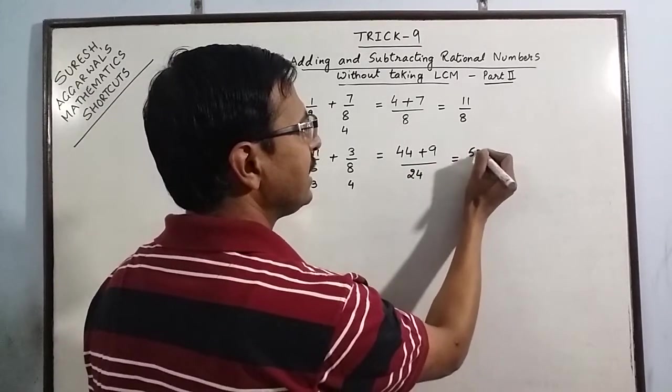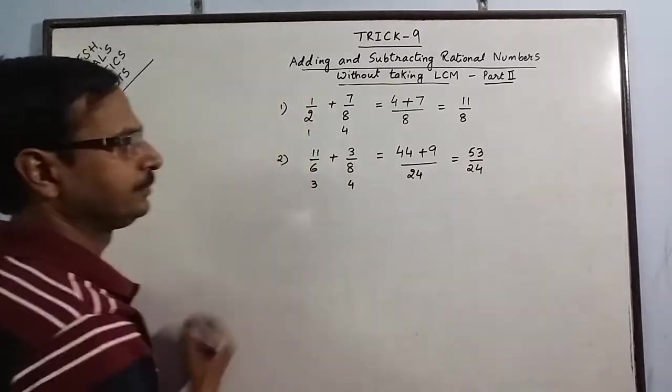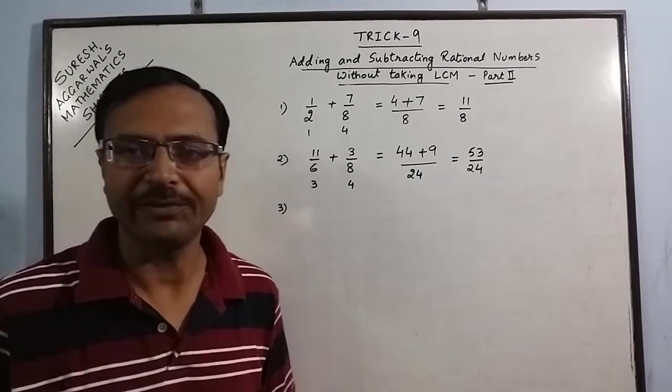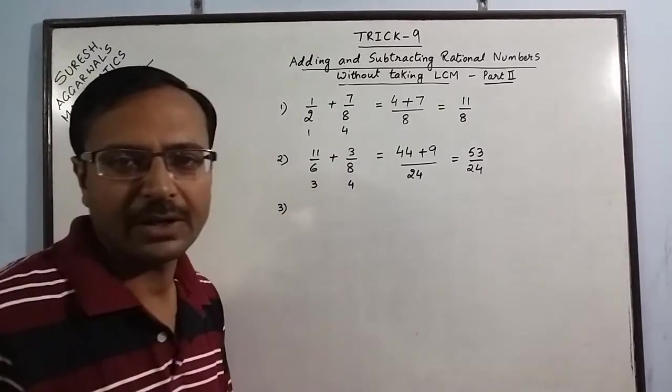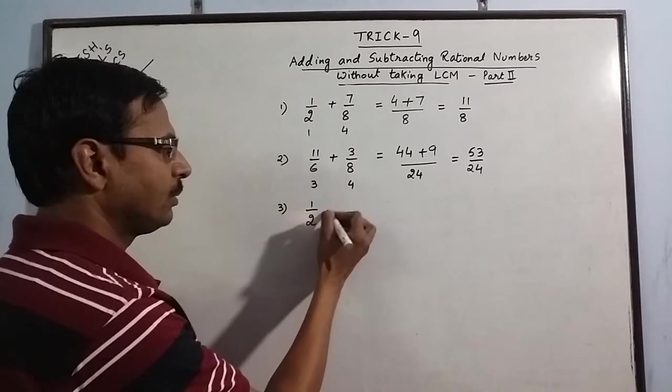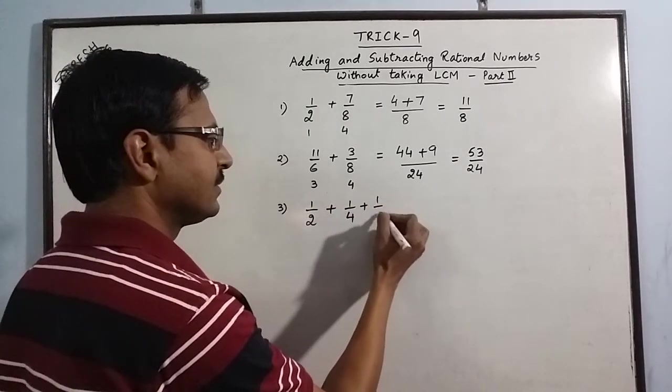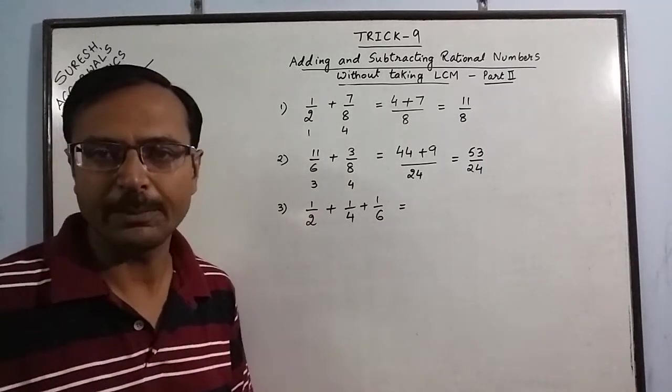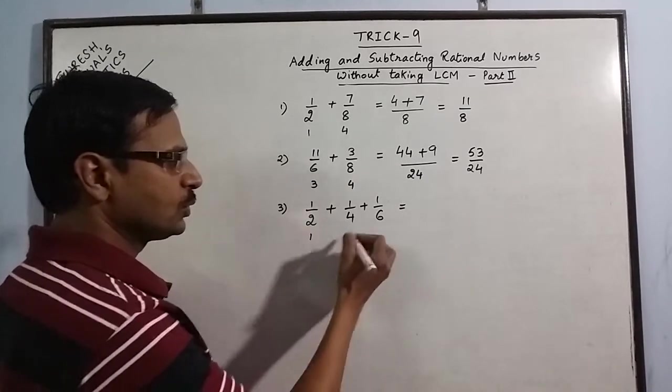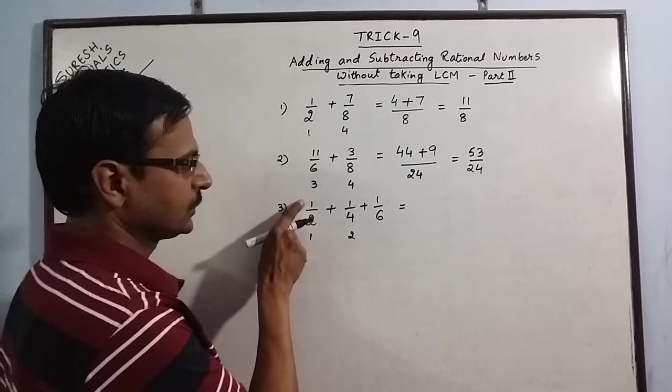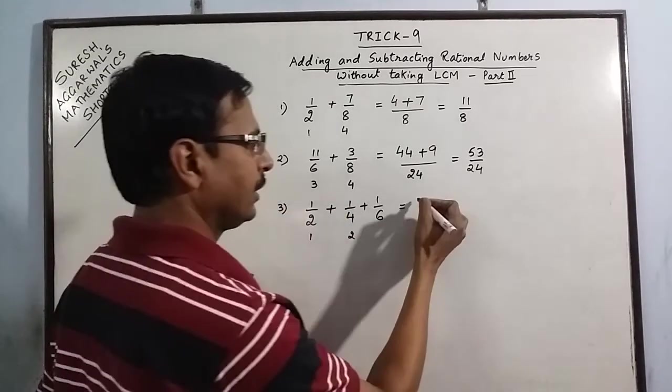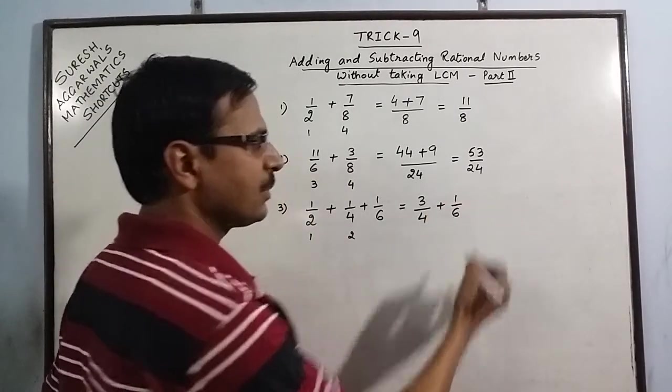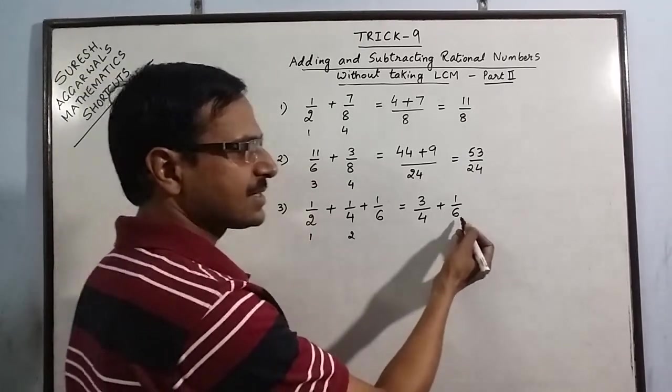Now let us take one more example in which we have 3 rational numbers having a common factor. Again, say 1 by 2 plus 1 by 4 plus 1 by 6. Now again I cancel out the common factor. I deal only with the first 2 rational numbers first. 2, 1 the 2, 2 the 4. 2 plus 1 is 3 and 2 into 2 is 4. The other rational number is 1 by 6.